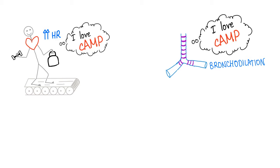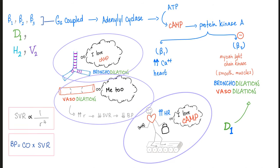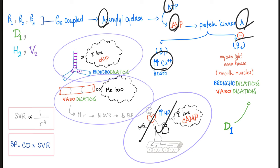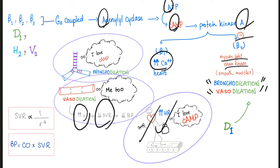Your heart loves cyclic AMP because it increases heart rate and contractility. Your bronchi also love cyclic AMP because it dilates them. Beta-1, beta-2, beta-3, D1, H2, and V2 are Gs-coupled. Stimulate adenylate cyclase → ATP → cyclic AMP → protein kinase A → increase calcium in the heart (contraction and increased heart rate); inhibit myosin light chain kinase in smooth muscles (relaxation → bronchodilation and vasodilation → decreased SVR → decreased blood pressure).